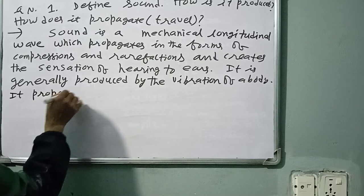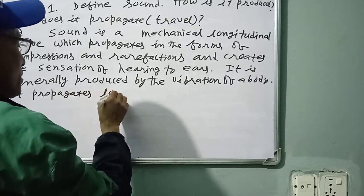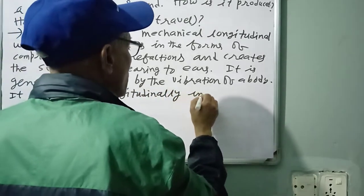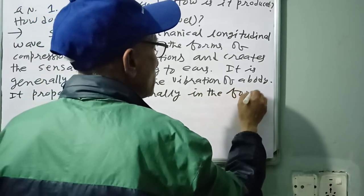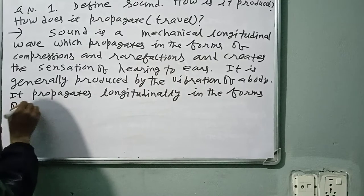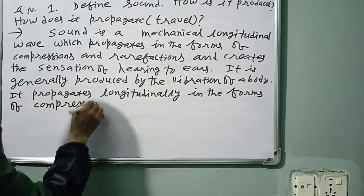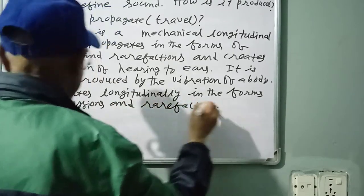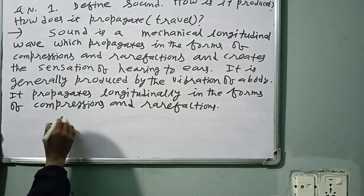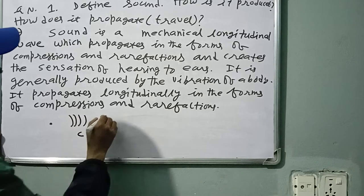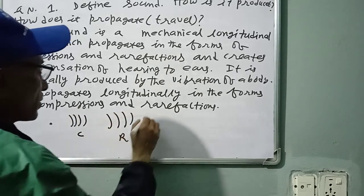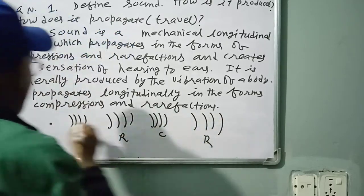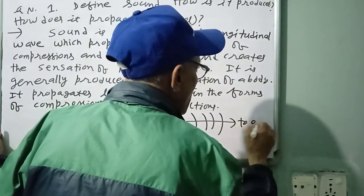How does sound propagate? It propagates longitudinally in the forms of compressions and rarefactions. For example, from a source of sound, compressions and rarefactions alternate as: compression, rarefaction, compression, rarefaction — traveling outward from the source.